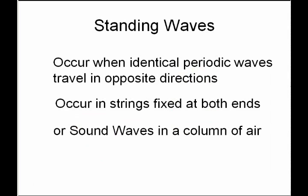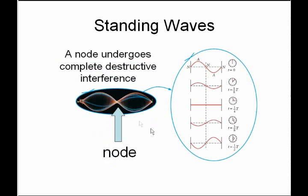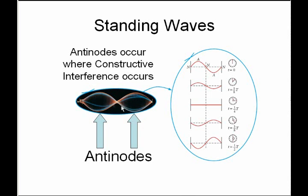We also learned about standing waves when identical periodic waves are traveling in opposite directions. The ones we talked about were vibrating strings or sound waves in a column of air. In the drawing for vibrating strings, one wave goes in one direction and the other goes in the opposite direction. There is a point in the center where there's no movement — we call that a node — and that is where complete destructive interference is occurring, those two waves canceling each other out. The points of maximum movement are called antinodes, where constructive interference occurs: the crest of one wave and the crest of the other wave add together to make an extra tall wave.